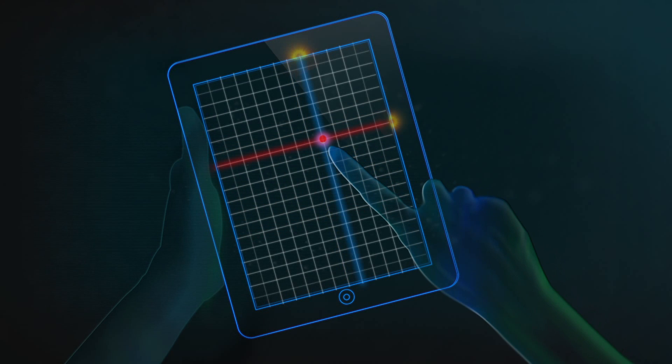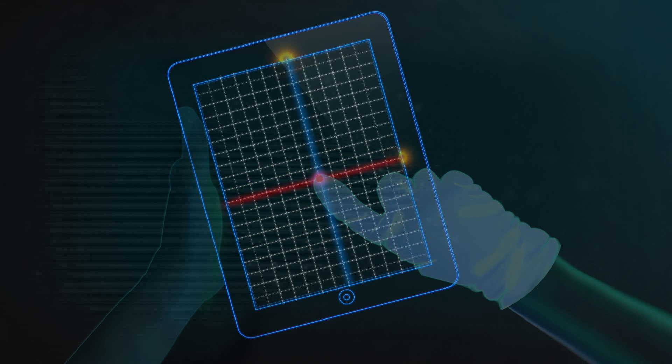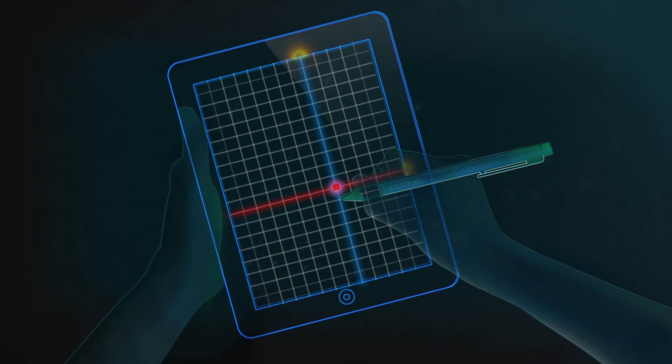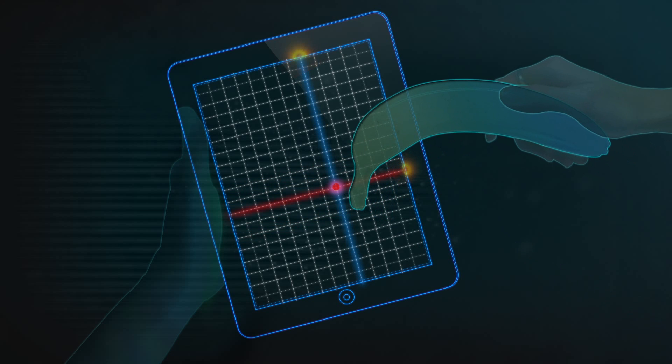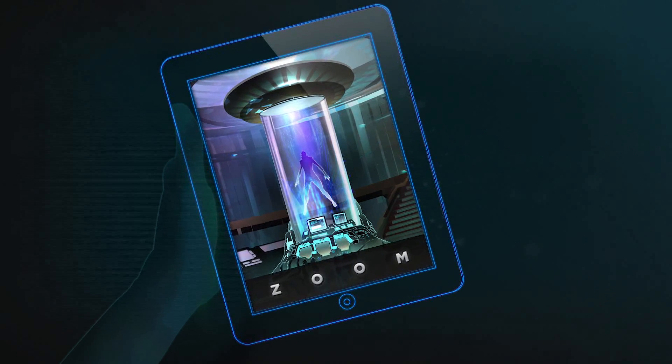So the sensors can't actually tell what a finger looks or feels like. They just know how good at conducting electricity fingers are. They're programmed to ignore lousy conductors like plastic or gloves, and really good conductors like metal. But they'll respond to anything that conducts like a finger. For smartphones, they're pretty easy to fool.